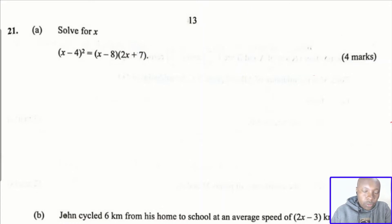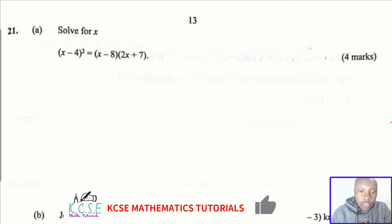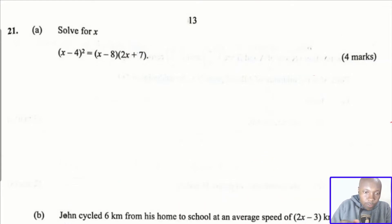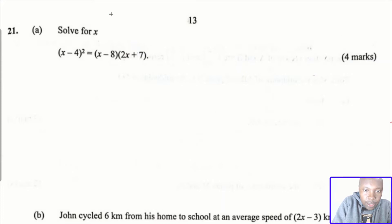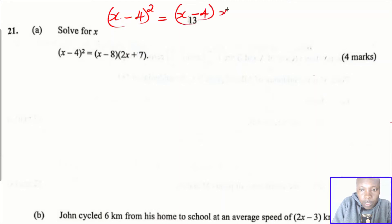Question 21 part a: (x − 4)² = 8(2x + 7). Let's solve this first part. We start with the left hand side, which is x subtract 4 squared. This is the same as (x − 4) multiplied by (x − 4), and when you expand these brackets, this is what you get.